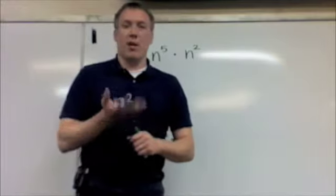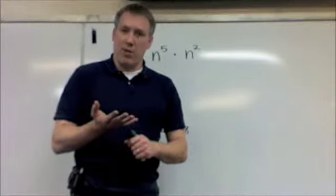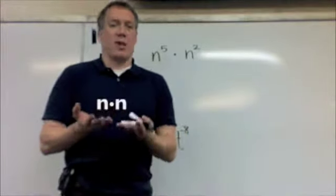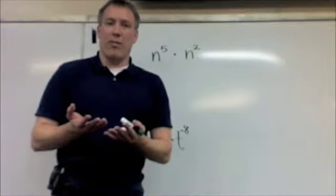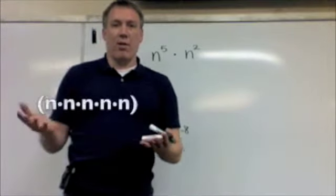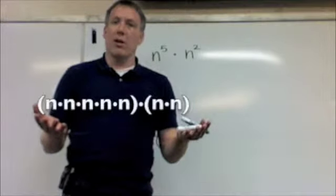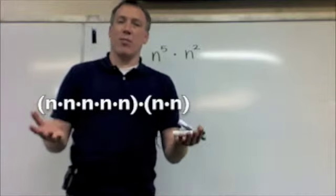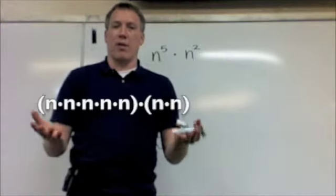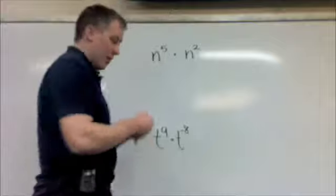The second monomial is n squared, which could also be rewritten as n times itself twice. If I put these both side by side, n to the fifth times n squared, I get n times itself seven times. And so n to the fifth times n squared is n to the seventh.